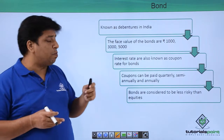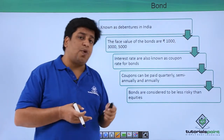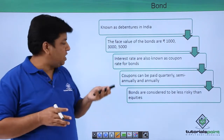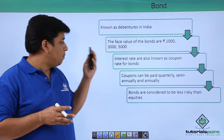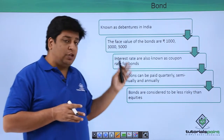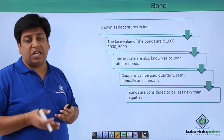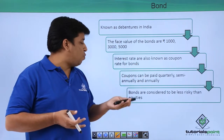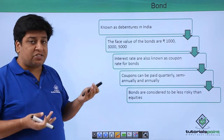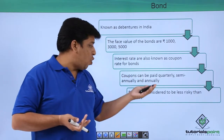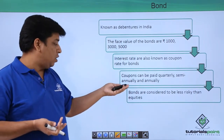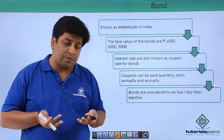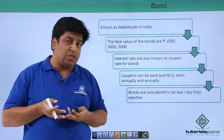In India, bonds are known as debentures. The face value of a bond is generally 1,000 rupees, 3,000 rupees, or 5,000 rupees. The market value or purchasing/selling value could be the same or different from the face value. Interest rates are known as coupon rates for bonds, and the interest payments are called coupons. Coupons can be paid quarterly, semi-annually, or annually. Bonds are considered to be less risky than equities.